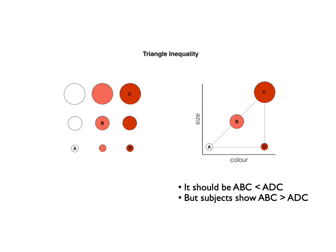This has suggested to theorists that although the geometric model is really useful and gives some insights into the nature and structure of people's psychological space, it doesn't account for all of their judgments. So I want to talk about three additional models that account for some of these changes.